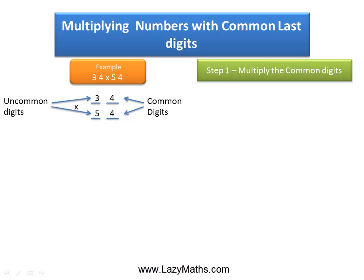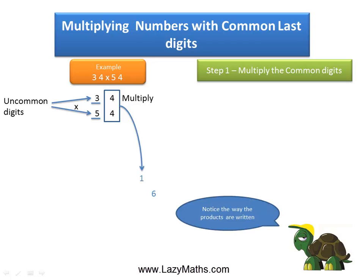The first step is to multiply these common digits. 4 times 4 is 16. Notice the way we write these products — 16 is written in the carryover format because the 1 of 16 is in the 10s place and 6 is in the 1s place.